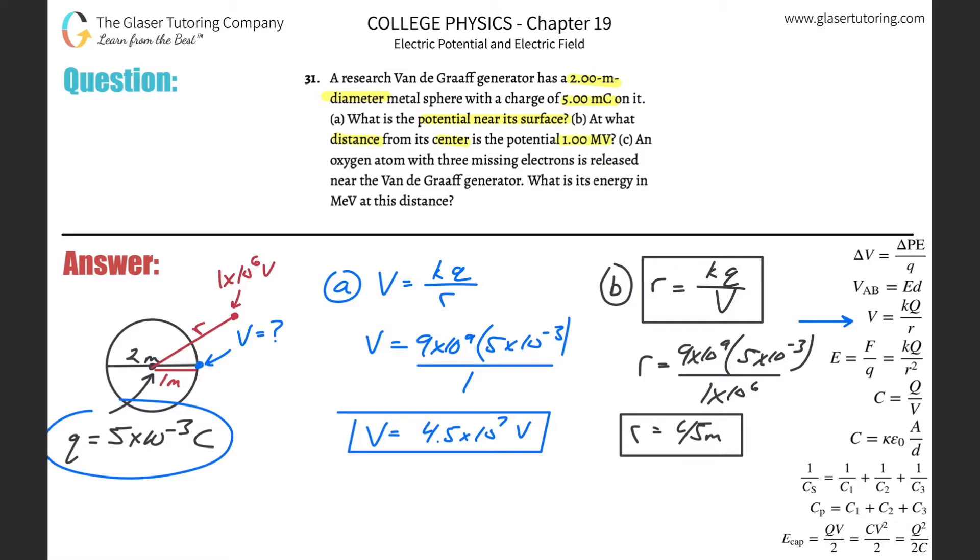And then, oh God, letter C. An oxygen atom with three missing electrons is released near the Van de Graaff generator. What is its energy in mega electron volts at this distance? So this little dot will represent the oxygen with three missing electrons. If it's missing three electrons, that means it's going to be a positive three.